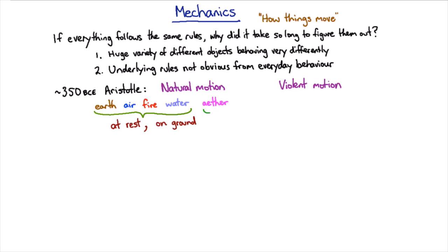And the idea was that the ether made up everything that was in the night sky. So stars, planets, the sun, all those kinds of things. And their natural motion was to move and stay in the sky.